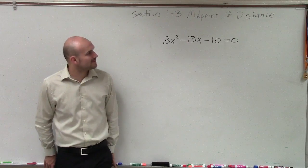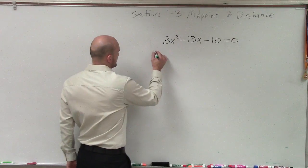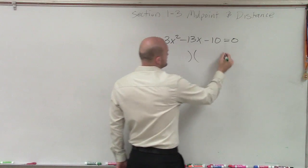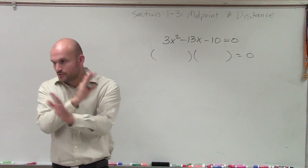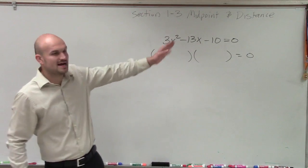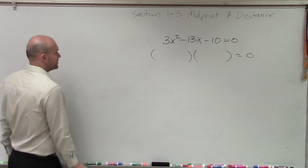So when you have 3x squared minus 13x minus 10, what I'd like to do is if I was going to factor this by using a little guess and check method, you can do the AC method and do A times C and then factor by grouping, that's not a problem. But I'm going to try to do it a little bit quicker for you.